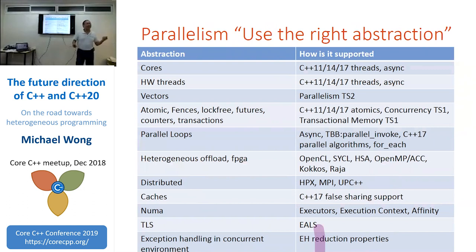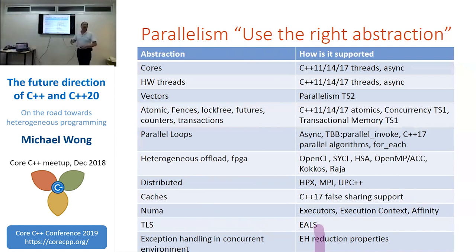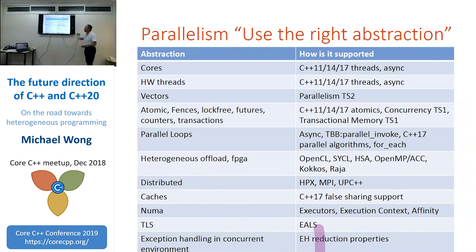The other side of this is about parallelism. In parallelism we're also trying to create the right abstractions. Does C++ support all the right kinds of parallelism at every level? The short answer is it doesn't. For cores and hardware threads, you absolutely have support in C++11, 14, and 17 with standard threads and async. For vectors, we don't have that yet — it's in Parallelism TS2. For atomic fences, there's some in the standards and some in various TSs. For parallel loops, we start reaching outside of C++ standard.